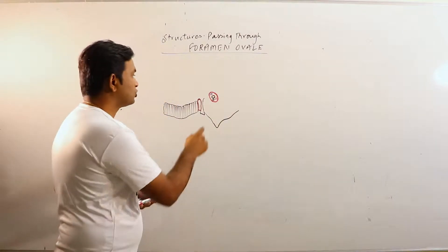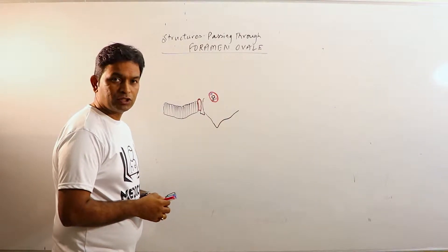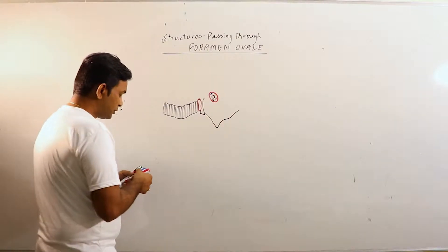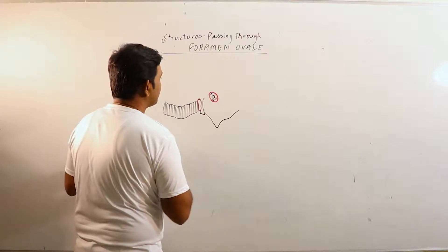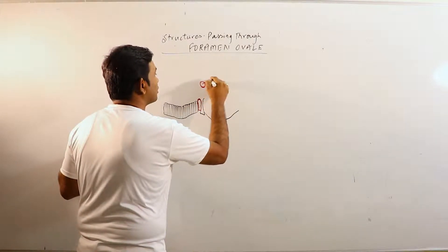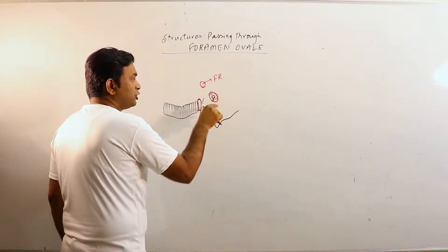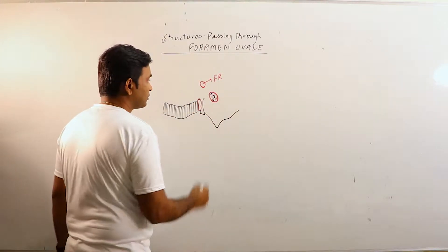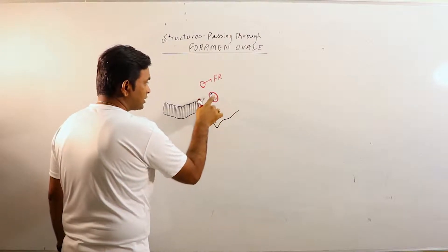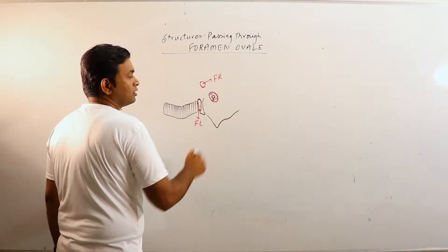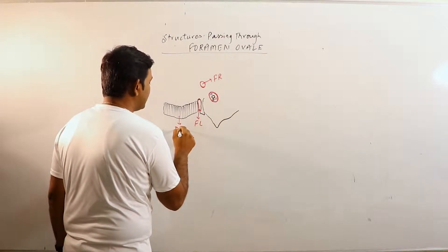Foramen ovale is a large oval-shaped foramen in the posterior body of the sphenoid, located posterolateral to the foramen rotundum. This is foramen lacerum, which can be observed posteromedial to the foramen ovale. This is dorsum sellae.